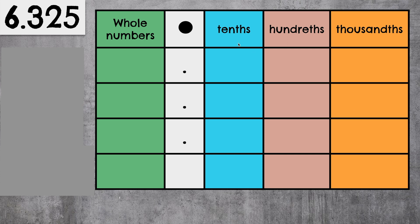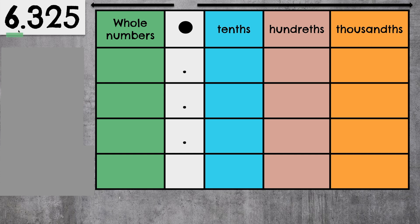Here we have a place value chart. We need to remember that numbers to the left of the decimal are whole numbers, and numbers to the right of the decimal are parts of one whole. We notice that we have a 6 to the left of the decimal. We can write that on our place value chart: 6. We notice that we have a 3 to the right of the decimal, which means we have 3 tenths. We have a 2 in the hundredths place, and we have a 5 in the thousandths place.